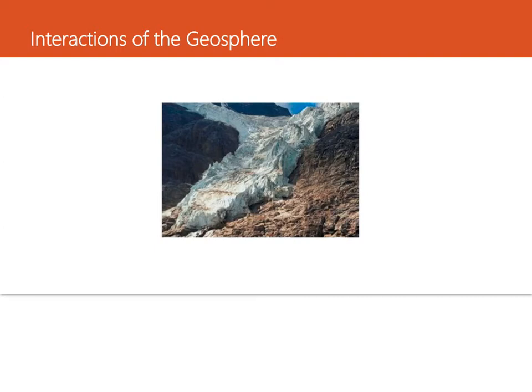And the geosphere and the hydrosphere interact when water or ice weathers, erodes, or deposits soil, rock, and sediment. So for example, the hydrosphere interacts with the geosphere when glaciers flatten portions of dry land. So glaciers are part of the hydrosphere, and they interact with the geosphere.